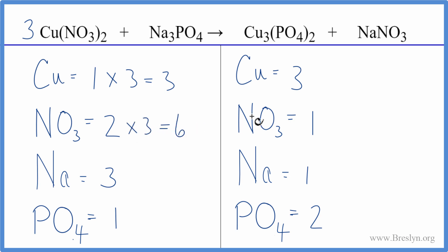Might as well try to balance the nitrates here. We have six here and one here. If we put a coefficient of six in front of the sodium nitrate, now we have one nitrate times the six. That gives us six of those, and those are balanced.